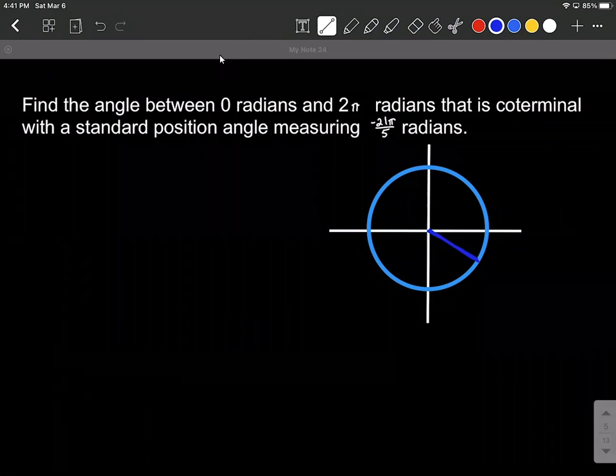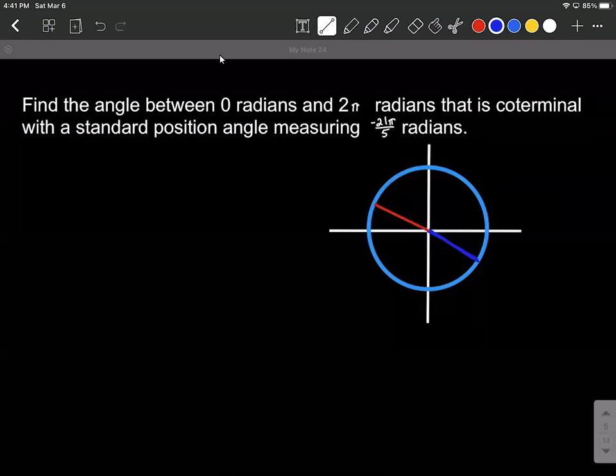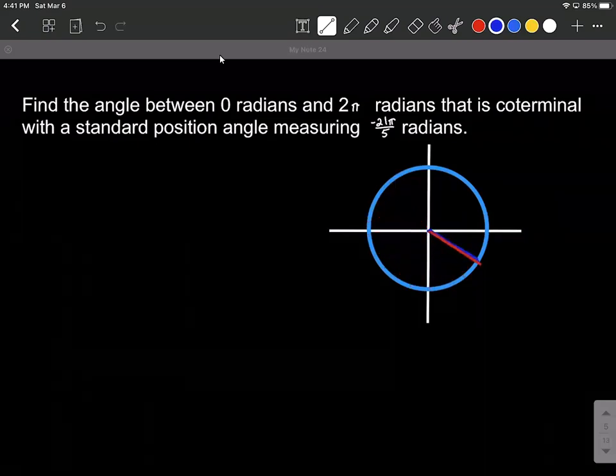So if we kind of take a look at our initial one, if we have a second one, what that would mean is it would be rotated around an extra time around the circle, either in the positive direction or in the negative direction, but it would land in the exact same finishing position as the initial angle. That's what we mean by coterminal.